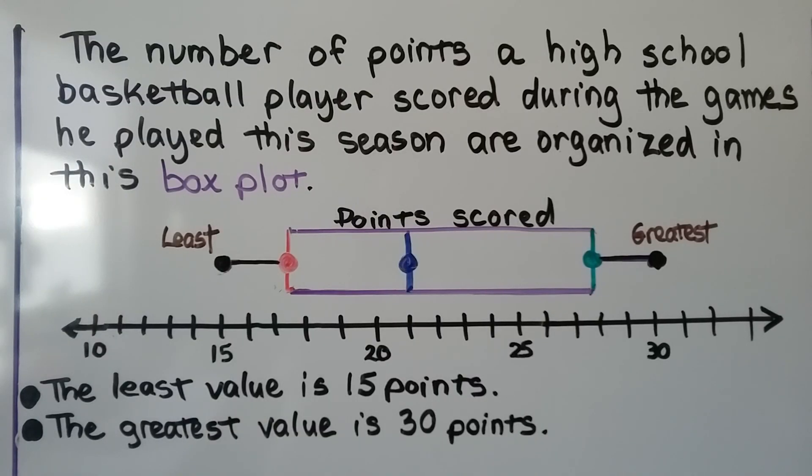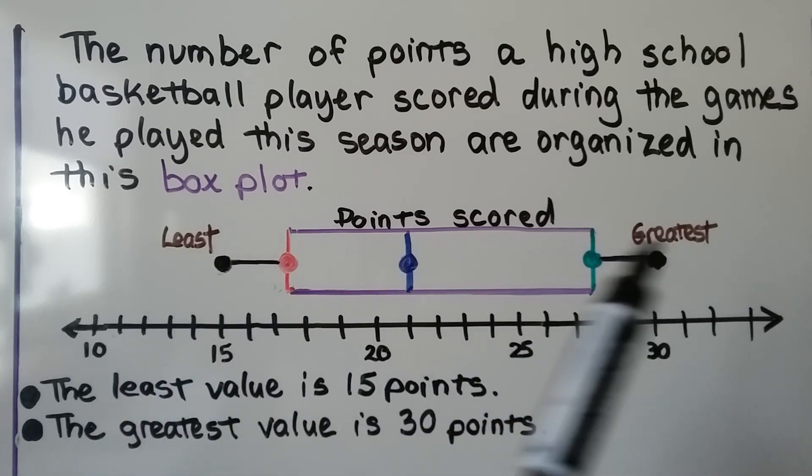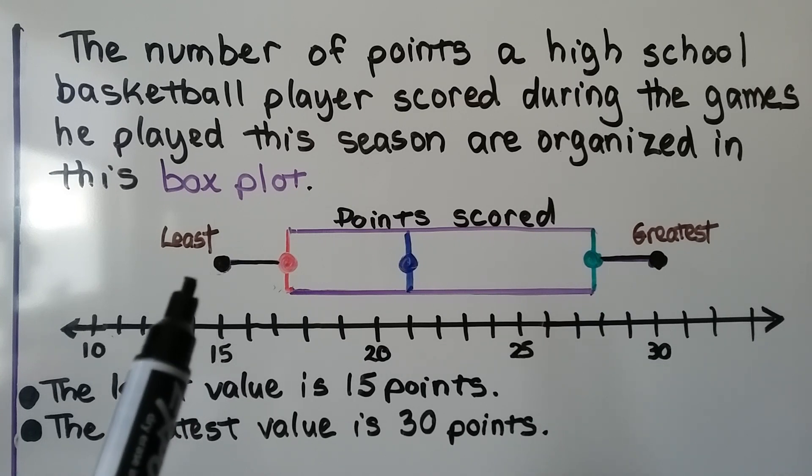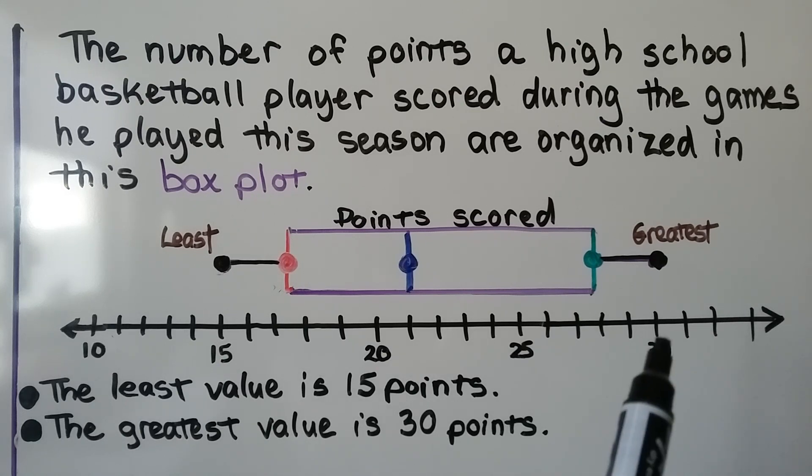The number of points a high school basketball player scored during the games he played this season are organized in this box plot. So this would be the points scored. The least points he scored was 15. That's at the end of this whisker. And the greatest value is 30 points. It's at the end of this whisker.